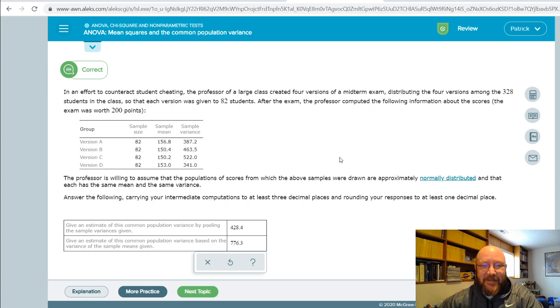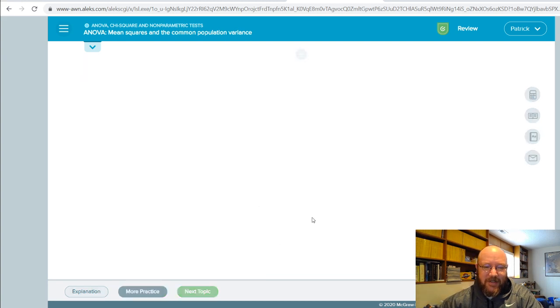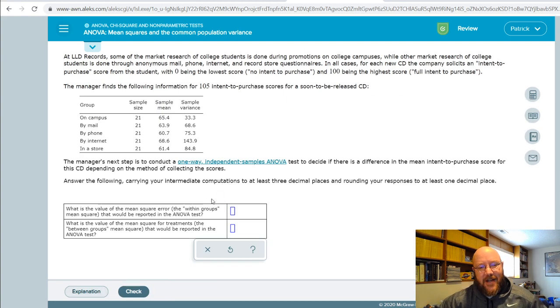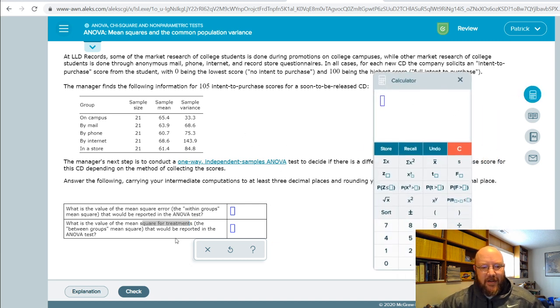All right, so the next one looks exactly the same; it's just going to talk about it in different terms. It's actually going to say mean square error or mean square treatments, so you just follow the exact same procedure. Just make sure you know what you're looking at. Mean square treatments—remember, the between groups mean square. Let's start with this first one: mean square error, the within groups mean square. We're going to calculate by averaging all of these out.